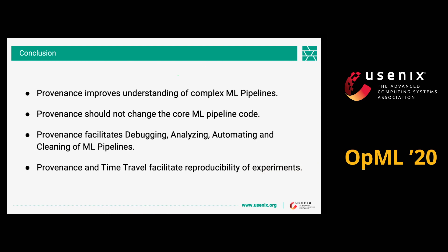In conclusion, as machine learning pipelines are becoming more and more complex, we want any mechanism that can help us understand them better, and provenance can help us with this. However, we want mechanisms that do not make us change the machine learning code — we want to keep that clear and free of any code other than machine learning. Provenance facilitates debugging, analyzing, automating, and cleaning of machine learning pipelines. And with provenance and time travel, we can move back and debug a pipeline at the time it was generated.